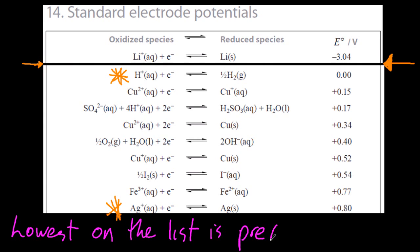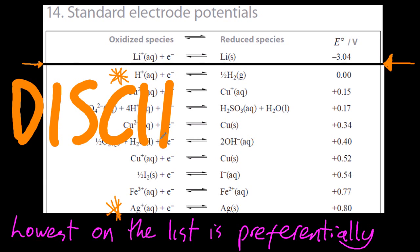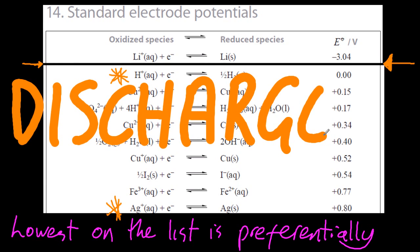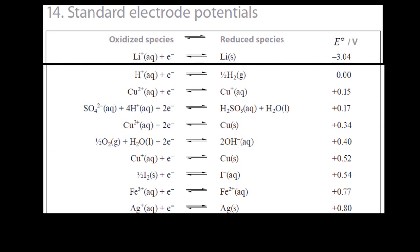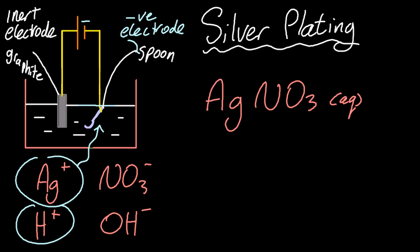So that's got the highest E-cell, if you will. Preferentially discharged means that that's the ion that turns into the atom. It's the one that actually plates on, which is silver.